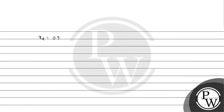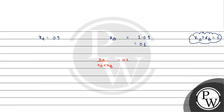Mole fraction of B will be 1 minus 0.9, because we know that x_A plus x_B is equal to 1, meaning chi_A plus chi_B equals 1. So mole fraction of B equals 0.1. Now, (N_A + N_B) multiplied by 0.1 is basically equal to N_B. So 0.1 N_A plus 0.1 N_B equals N_B, which gives us 0.1 N_A equals 0.9 N_B.